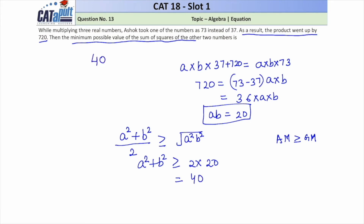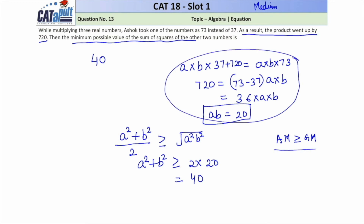The answer for this question is 40. This question falls under the medium difficulty category — you need to set up the equation correctly and also apply the AM-GM inequality. The ideal time to solve this question is one minute thirty seconds, though if you're comfortable with the concepts you can do it in one minute. That's it for this question, thank you!